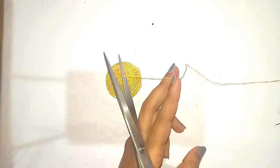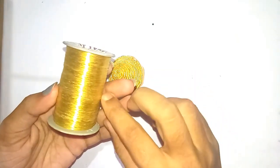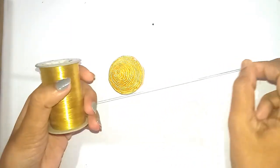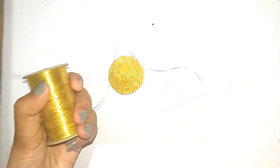Cut off the excess thread. Using a golden color thread, I am making hanging for the bell. Cut a small piece of thread.